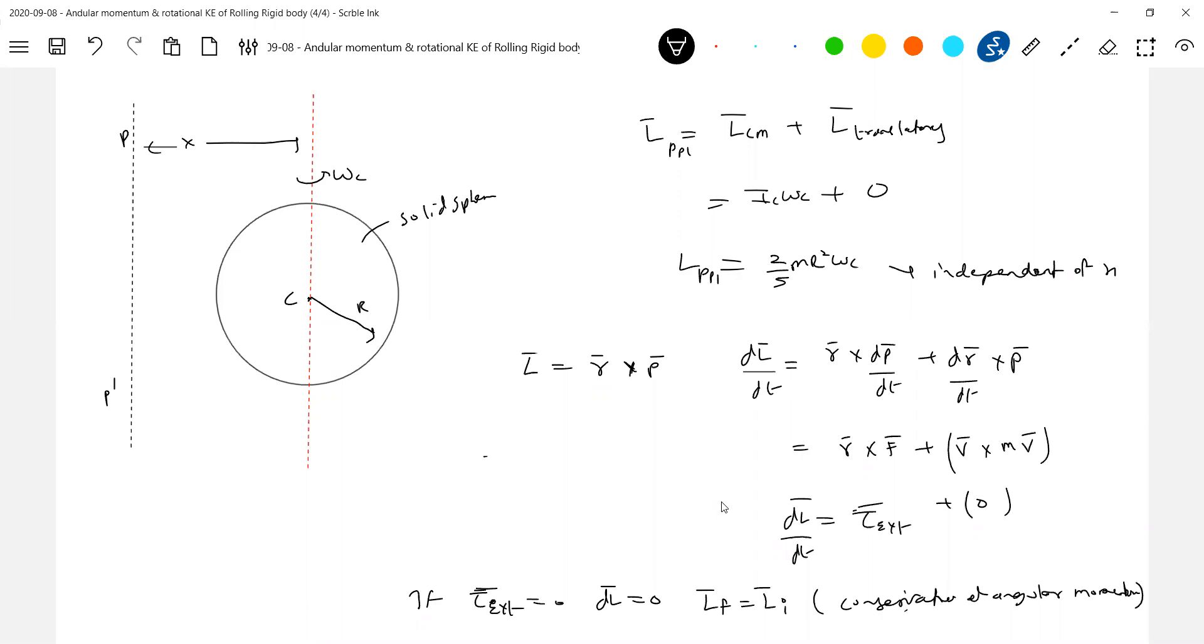Net external force acting on system zero, linear momentum is conserved. Net external torque is zero, angular momentum will be conserved here.